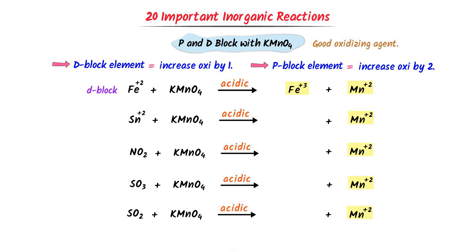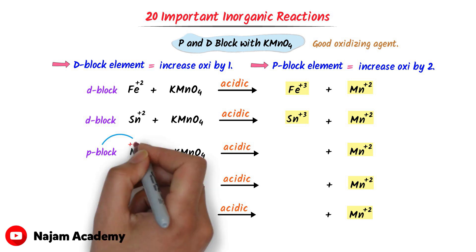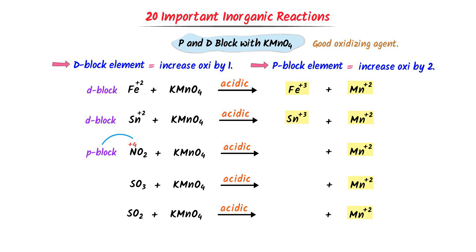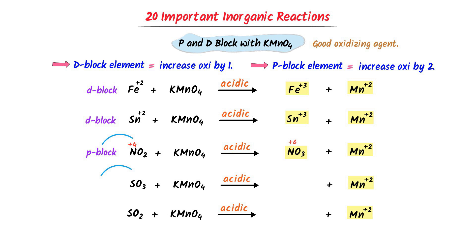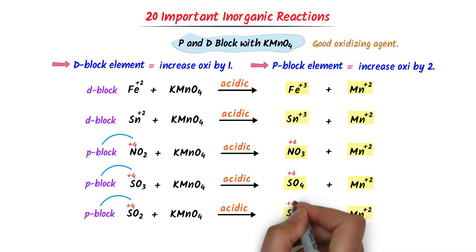I get Fe³⁺. Secondly, Sn is from the d block — increasing by one gives Sn³⁺. Thirdly, nitrogen is from the p block with oxidation state plus three — increasing by two gives NO₃⁻ (oxidation state of nitrogen becomes plus six). Fourthly, sulfur is from the p block with oxidation state plus four — increasing by two gives SO₄²⁻ (oxidation state plus six). Lastly, sulfur is again from the p block — increasing by two gives SO₄²⁻.